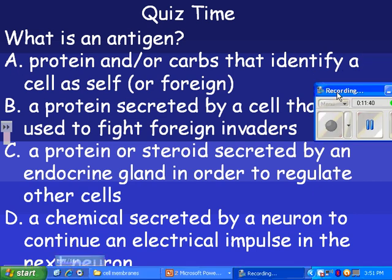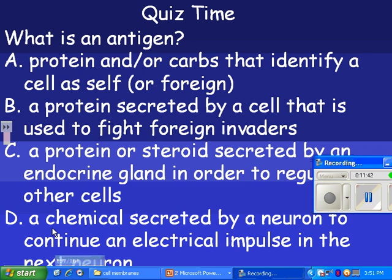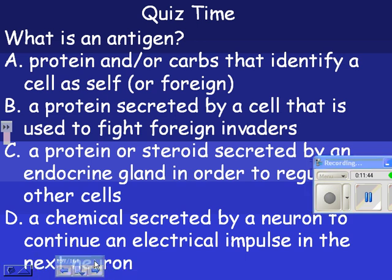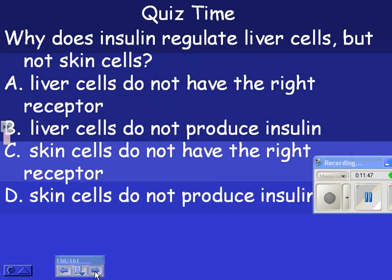So, what's an antigen? A protein and/or carbohydrates that identify the cell as self — that is it. Why does insulin regulate liver cells but not skin cells? Skin cells do not have the right receptor — that is the answer. Liver cells do not produce insulin — that's true, but we're talking about insulin affecting them, not being produced by them.